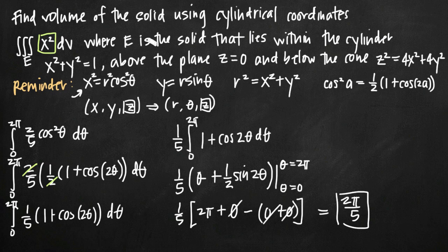2pi over 5 is the volume of solid E, bounded by the cylinder r equals 1, the plane z equals 0, and the cone z equals 2r, evaluated in cylindrical coordinates.